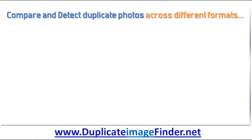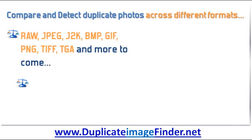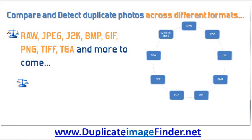If you have duplicate images in different formats, it is even possible to find identical or similar photos with different file types. The formats supported include RAW, JPEG, J2K, BMP and GIF.